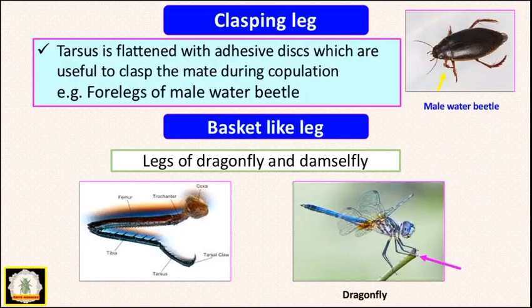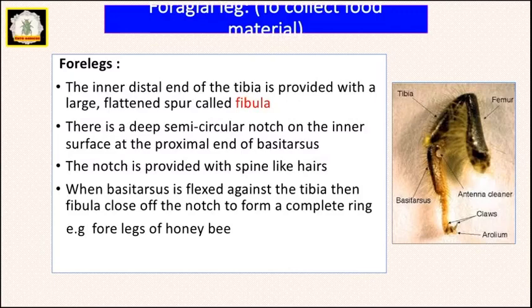The next type is basket-like legs. The legs of the dragonfly and damselfly — all three pairs — are called basket-like legs or scooping legs. Interestingly, they don't use their legs for walking; they use them only for holding prey while feeding on them.